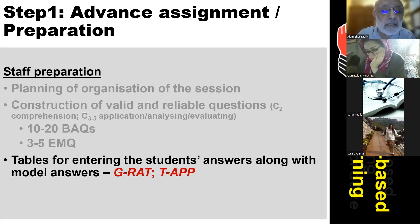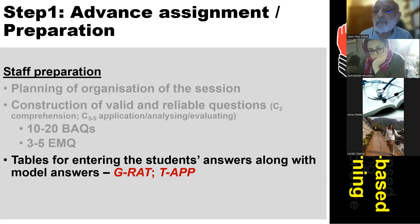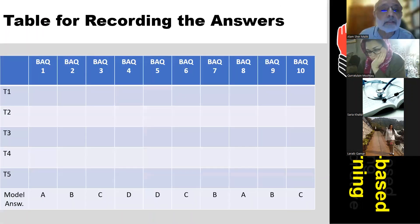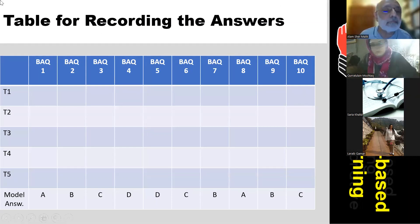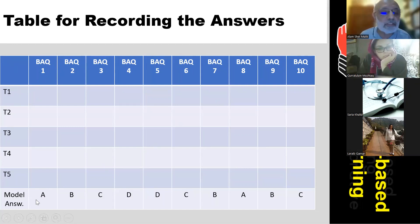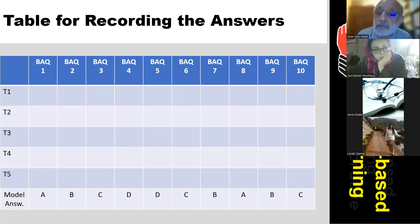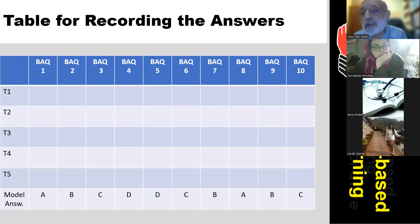The teacher also has to prepare tables for entering students' answers along with model answers, if you want to do this manually. In the table, on one side there are teams — Team 1, 2, 3, 4, 5 — and on the other side there are questions and model answers. This table will be used for both the group readiness assurance test and the team application test.